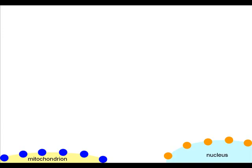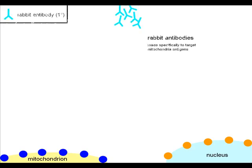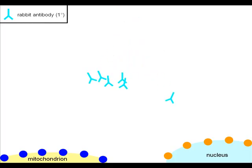Now we want to show two organelles with different colors. First, we introduce the primary antibody for the mitochondrion, and we have chosen to make this one a rabbit antibody. They will not bind to the antigens on the nucleus, since they are made specifically to target mitochondria antigens.